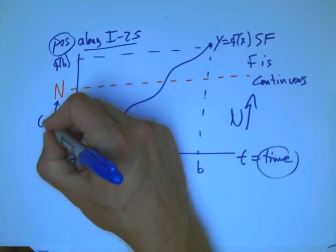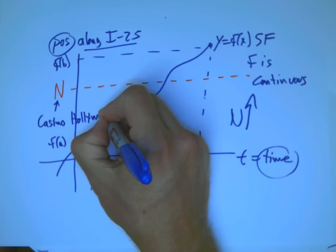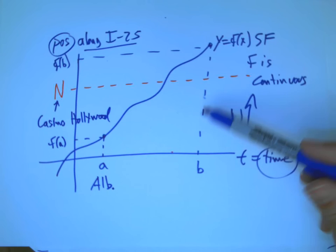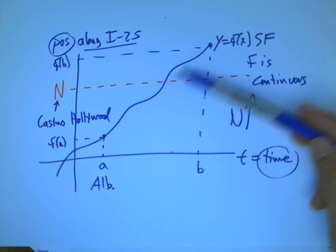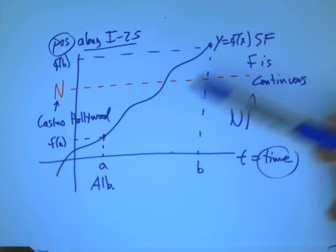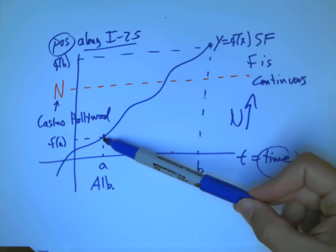And suppose I start in Albuquerque, and I end up in Santa Fe, and I try to claim that I never ever went by, let's say what's in between, Casino Hollywood, say. If I claim I got from Albuquerque, and I, here I'm on I-25,